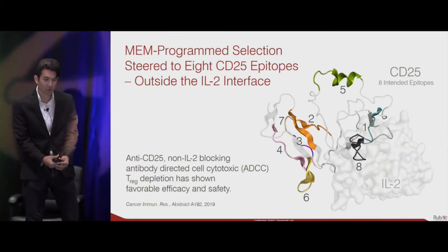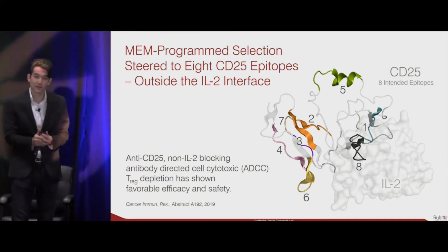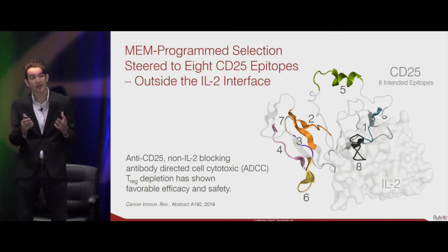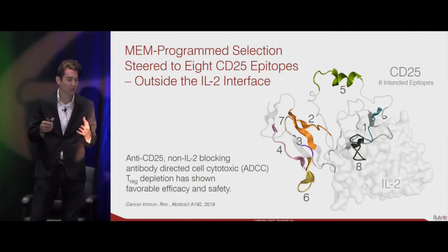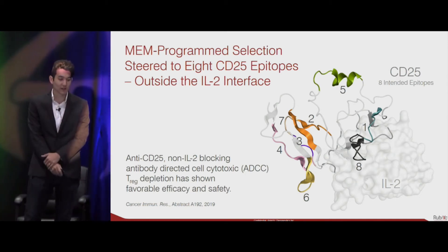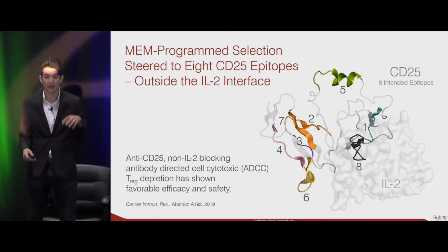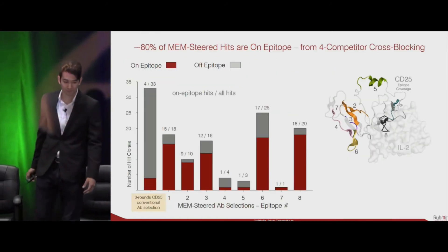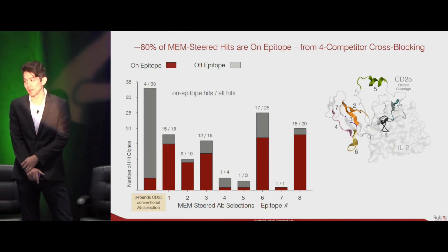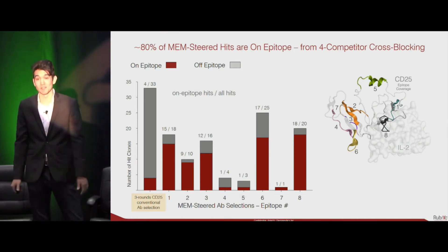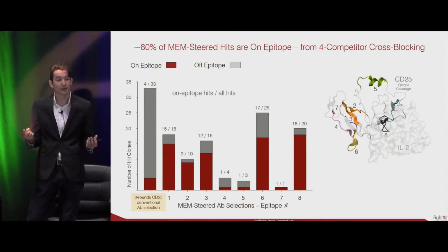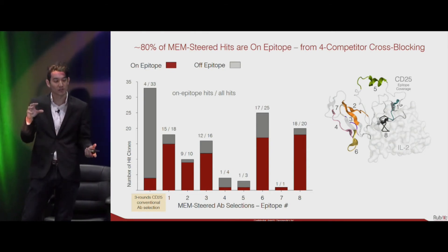You might be wondering: does any of this work? We tested it on an internal campaign with CD25, where the goal is to discover an antibody with ADCC activity for CD25 that doesn't interfere with the binding between CD25 and its protein partner IL-2. We targeted eight epitopes as potential candidates for an antibody that could suffice for that purpose, and ran those eight epitopes through our MEM campaign program.